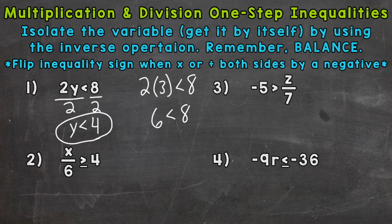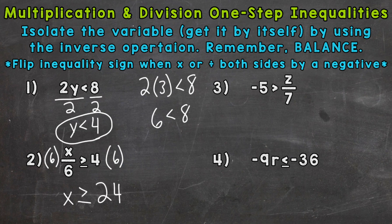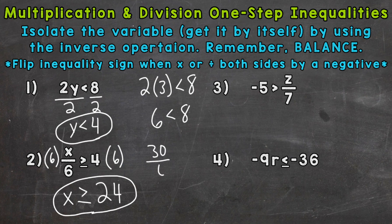On to number 2, where we have x divided by 6 is greater than or equal to 4. We are dividing by 6, so the opposite is to multiply by 6. Let's multiply both sides by 6. The 6s on the left cancel out and isolate our x. Bring down our inequality sign. 4 times 6 is 24, so x is greater than or equal to 24. Let's try 30, since 30 is greater than 24. 30 divided by 6 is 5, which is greater than or equal to 4 — true. So 30 is a solution along with anything else that's greater than or equal to 24.